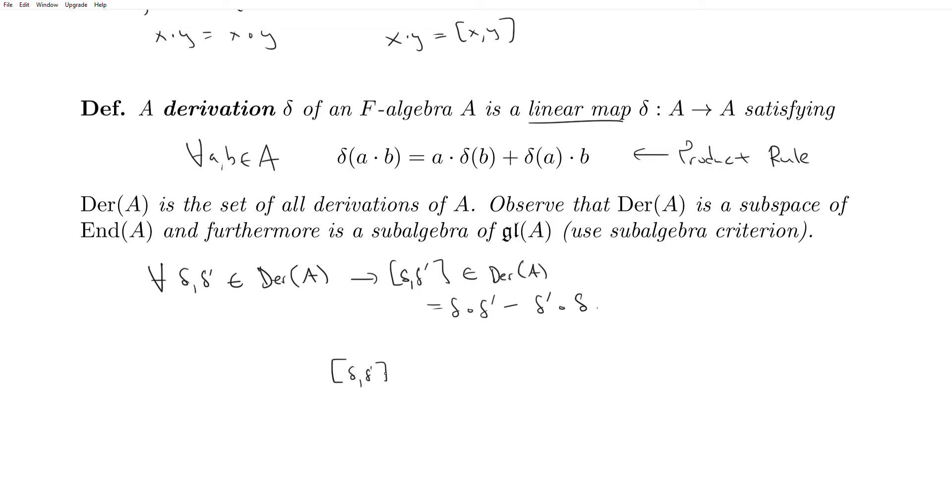So delta bracket delta prime acting on A dot B is equal to, or should be equal to, delta bracket delta prime of A dot B plus delta bracket delta prime of A dot B. And so this is just a simple computation that you can do out yourself. It's just expanding this out, and you'll see the left-hand side is indeed equal to the right-hand side.